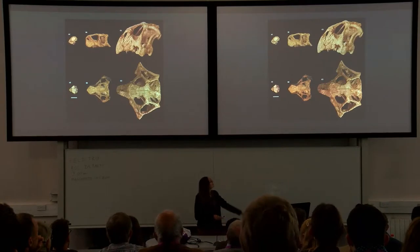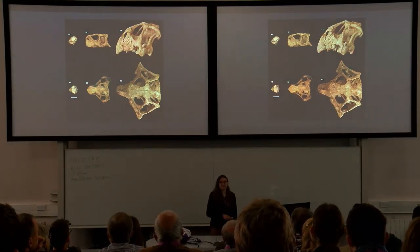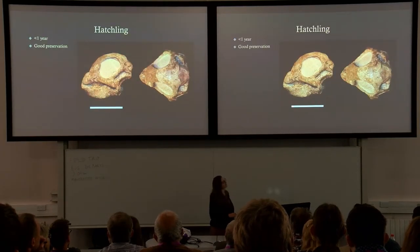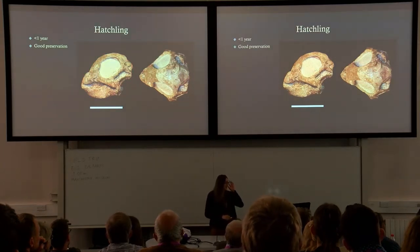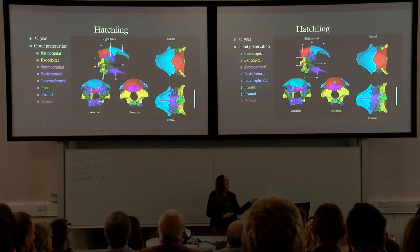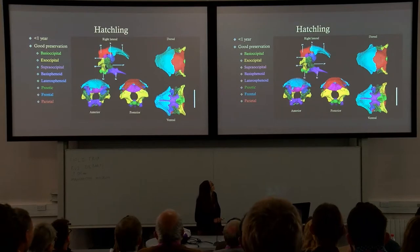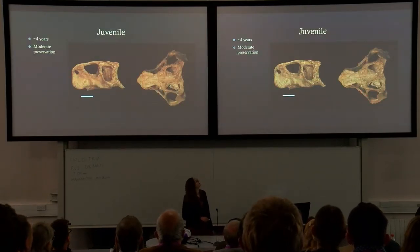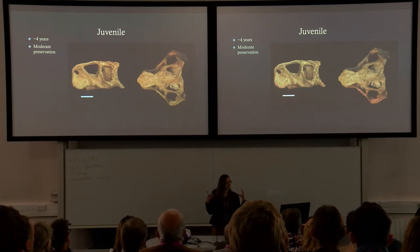The hatchling was under one year old and has very good preservation — pretty complete except for the nasals, which appear to have been reconstructed in plaster since nothing appeared on the CT scans. The segmented brain case shows clear sutural boundaries and was a joy to segment. The juvenile, around four years old, had moderate preservation — lacking a rostral and with part of the posterior skull slightly crushed, resulting in a difficult CT segmentation.